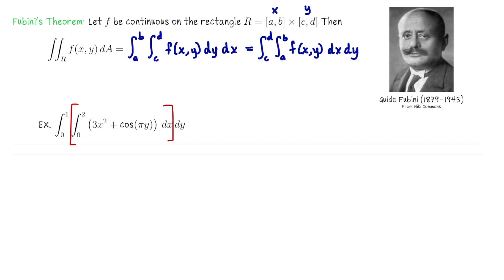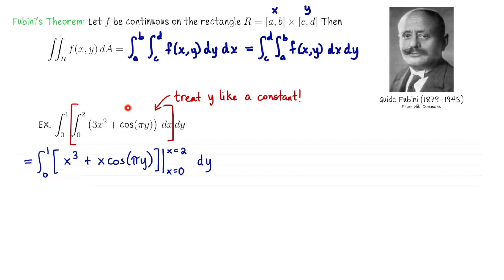Let's compute this double integral. The integrand is 3x² + cos(πy). We do the inside integral first — we integrate with respect to x, treating y like a constant. The antiderivative of 3x² with respect to x is x³, and the antiderivative of cos(πy) with respect to x is x·cos(πy) since cos(πy) is a constant. After evaluating this definite inside integral, we still have the outside integral from 0 to 1 with respect to y.